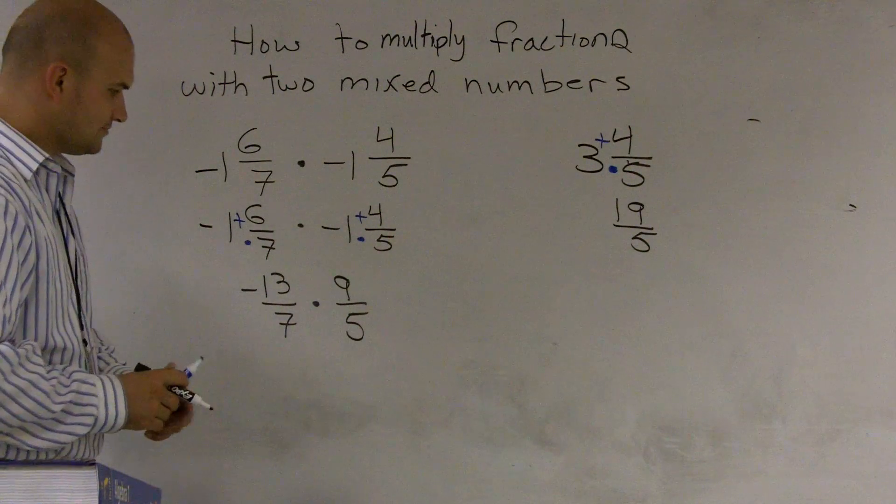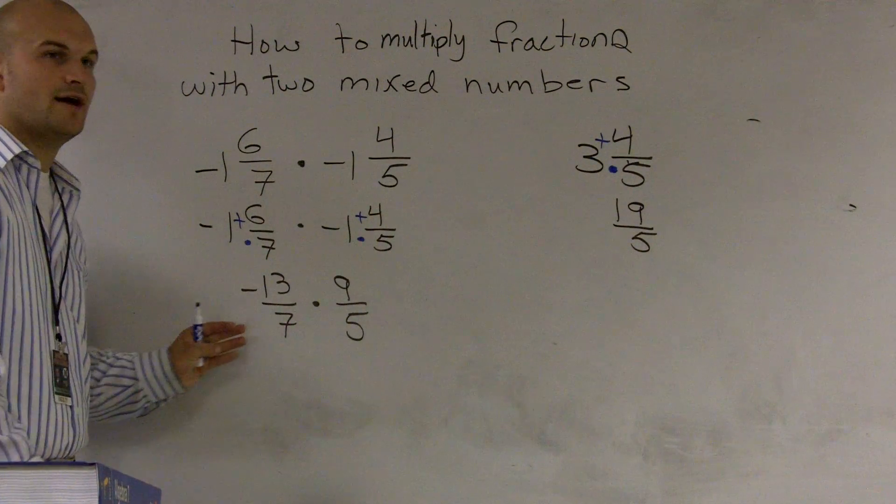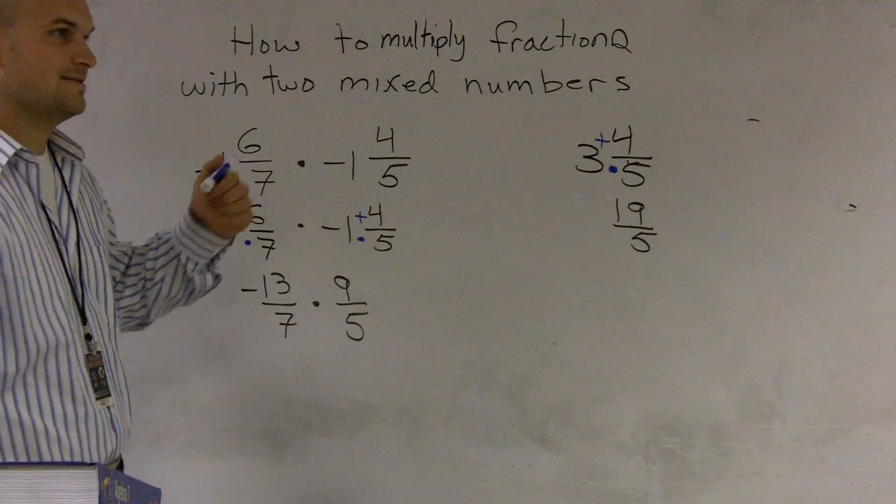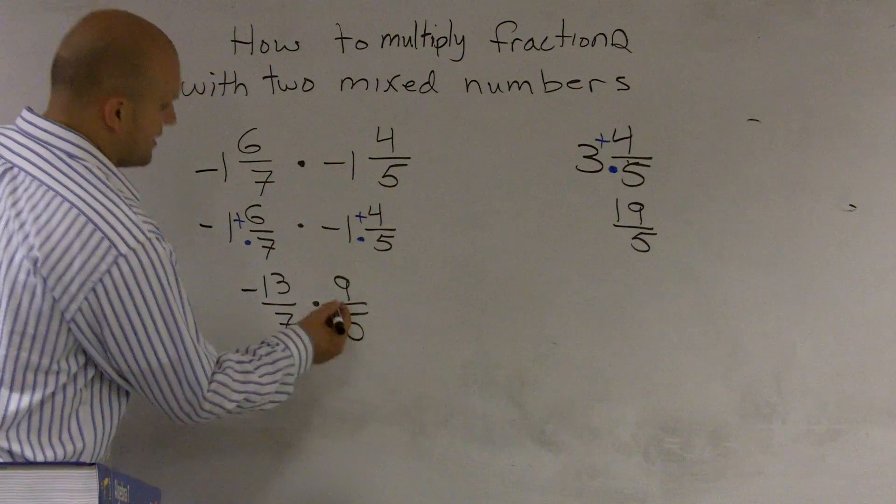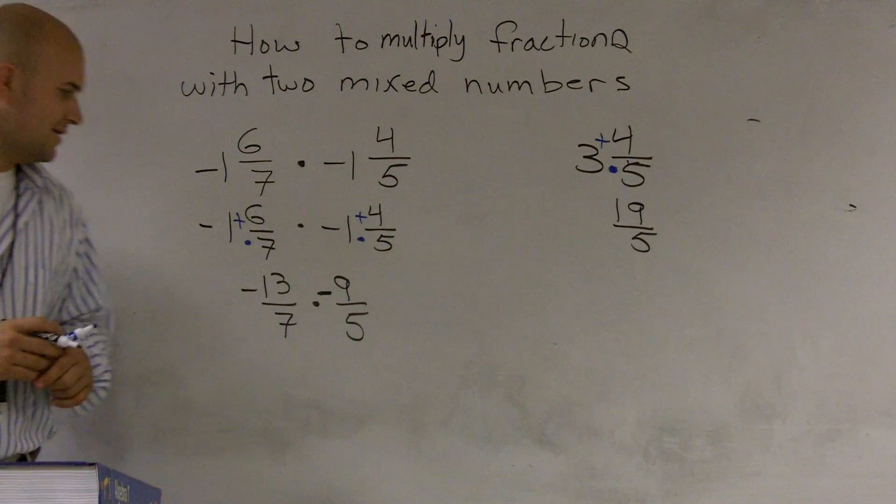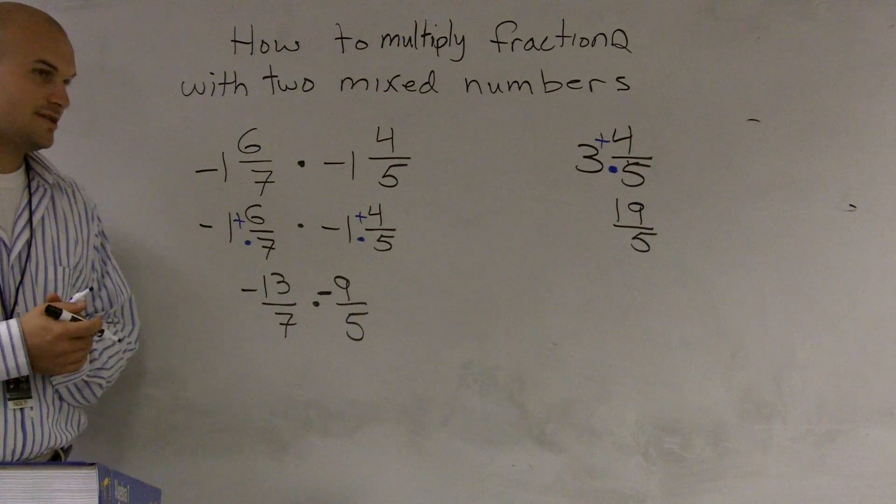So now I multiply. Remember, you're going to go ahead and multiply across. So that would be negative nine, correct? So now I need to go ahead and multiply across to see what that would be.